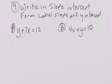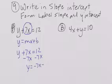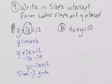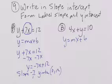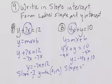Write in slope-intercept form and label the slope and the Y-intercept. We have to do Y equals MX plus B. Our X term is in the wrong spot, so we're going to zero pair it out: negative 7X and negative 7X. Y is equal to negative 7X plus 12. The slope is negative 7 over 1, and the Y-intercept is (0, 12). Again, we need Y equals MX plus B. Minus 4X minus 4X gives Y equal to negative 4X plus 10. The slope is negative 4 over 1, and the Y-intercept is (0, 10).